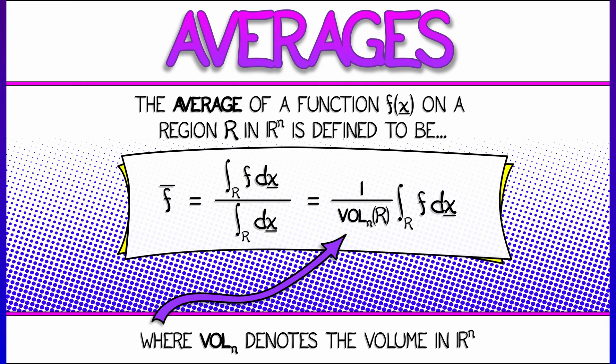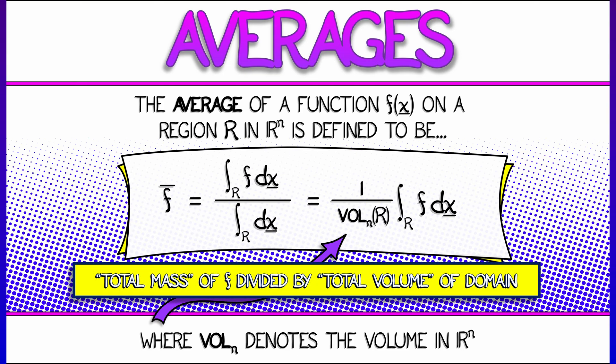Now you're going to want to make sure that that region R is sufficiently fat so that it has non-zero volume. But once you've got that, then this makes sense. It's kind of like the total mass of f divided by the total volume of the region. That's what the average is.